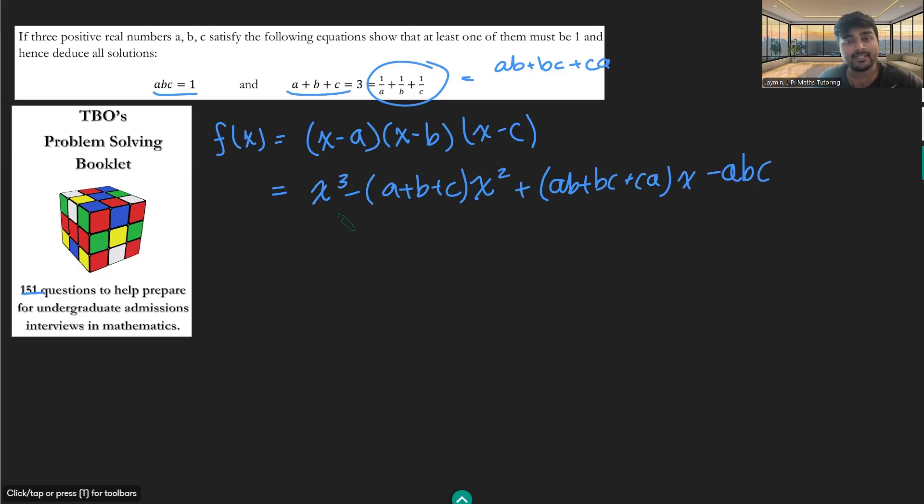So if you just expand the brackets there you get this cubic here. Okay, but we know what A plus B plus C is, that's just three, so this is x³ minus 3x². AB plus BC plus CA, well we've just worked out that that's three as well, so it's going to be plus 3x and then minus ABC, that's minus one.